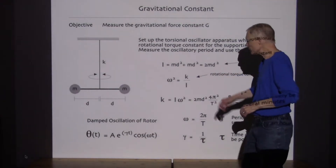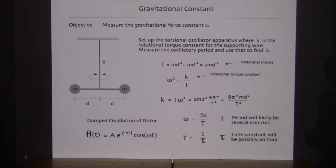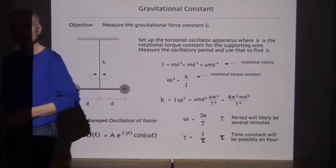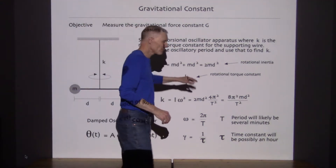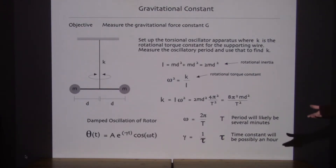It's actually important for the purposes of the lab that we also know the rate at which the oscillations drop off — the amplitude of the oscillations will be dropping off. The period of oscillations here is probably going to be at least several minutes — it could be as much as five or ten minutes for one oscillation. This is not something that's oscillating back and forth very quickly. So we do have to stay still, take a seat, sit quietly, and watch the oscillations.